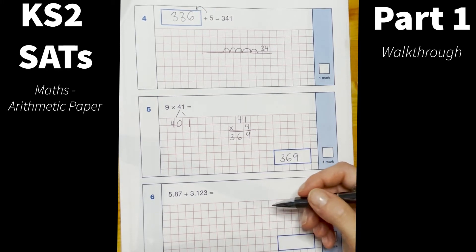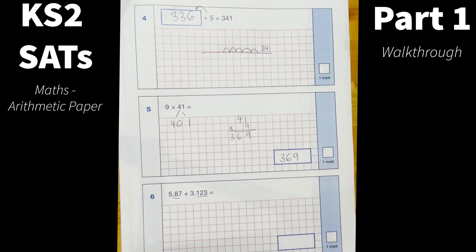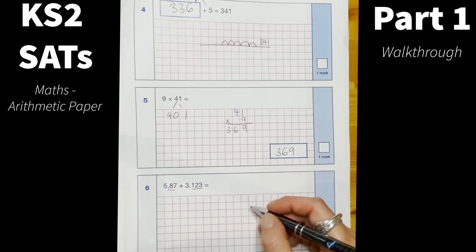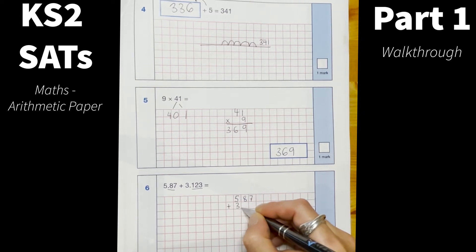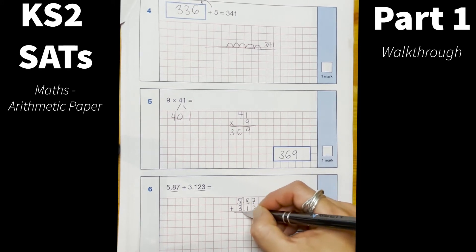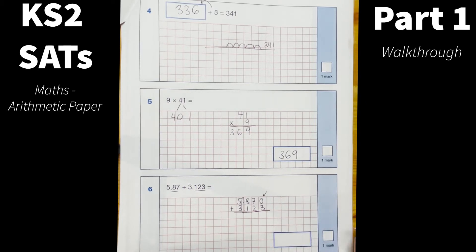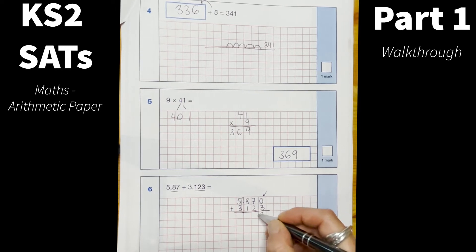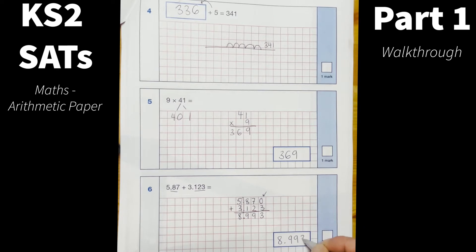Okay now number 6, adding decimals. Now this is a question that sometimes children get stumped with as we have a different amount of decimal places after the decimal point. So the best thing to do here with this number is to align the decimals, so 5.87 add 3.123. It's always good to remind the children that the decimal points should line up, you could almost say like the buttons on a shirt. And then in this place here 0 needs to go as a placeholder. 0 and 3 is 3, 7 and 2 is 9, 8 and 1 is 9, 5 and 3 is 8. I add my decimal point and I'm gonna put my answer in my box there.